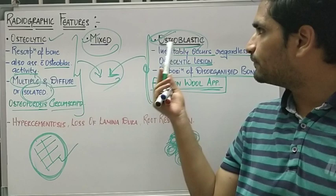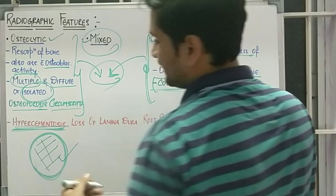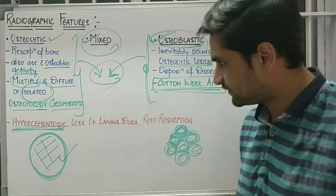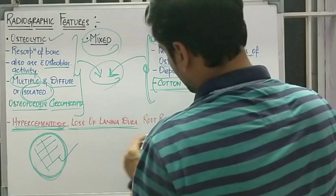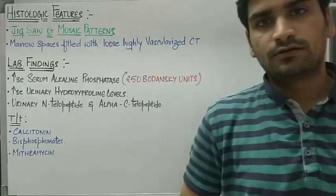Apart from these radiographic features, there is also hypercementosis around the roots of the teeth due to increased alkaline phosphatase levels. There is loss of continuity of the lamina dura, and root resorption may also be seen in some cases.